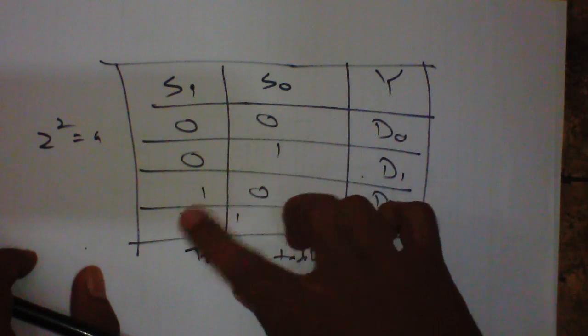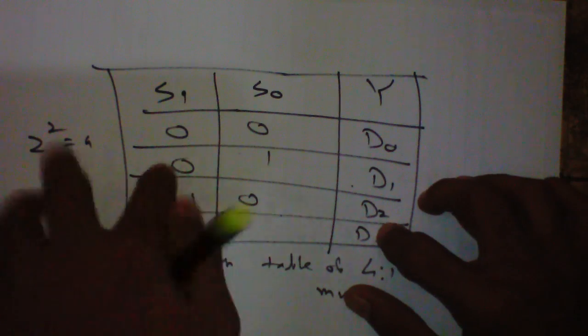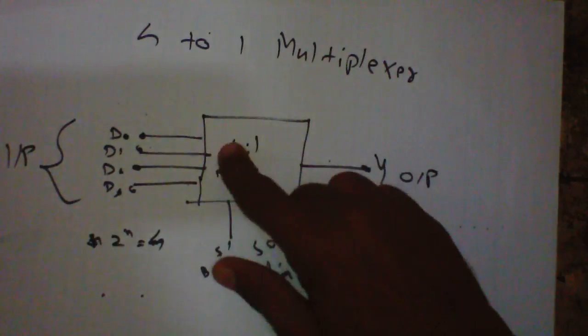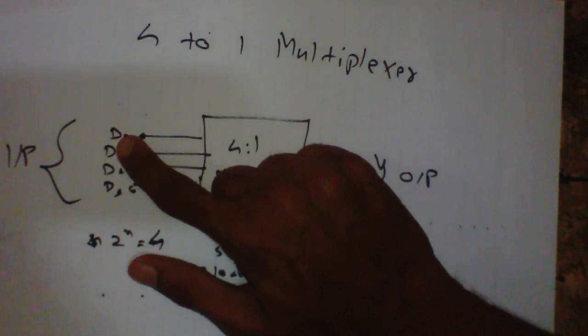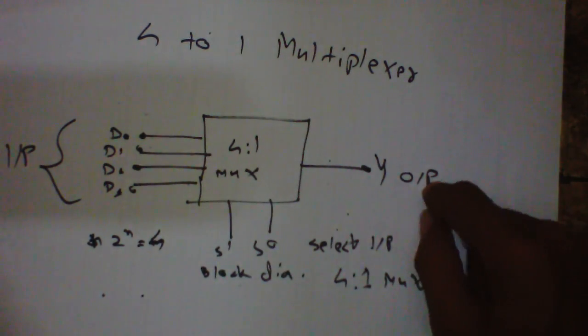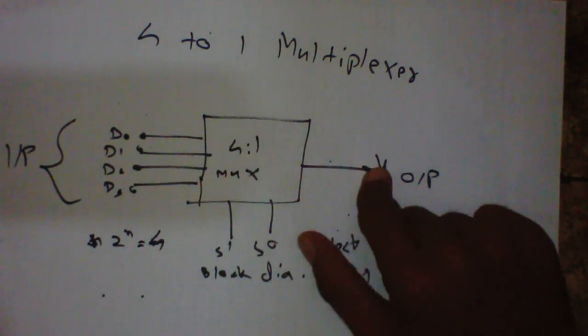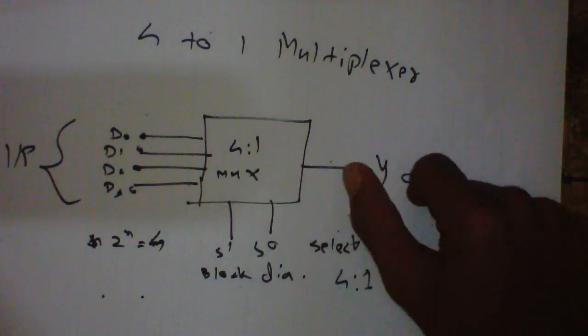So 0 0, 0 1, 1 0, 1 1: D0, D1, D2, D3. When both S are 0, input D0 will be forwarded to output. When one is 0 and one is 1, second will be forwarded. When first one is 1 and second one is 0, third one is forwarded. And when both are 1, fourth one will be forwarded.